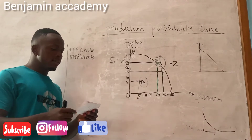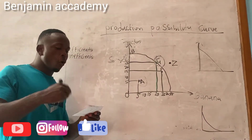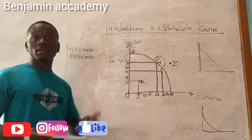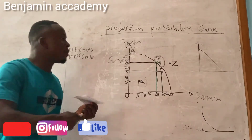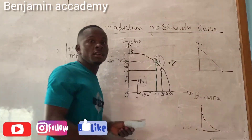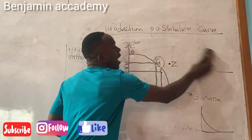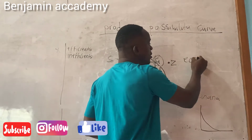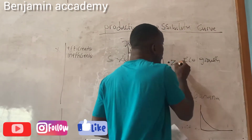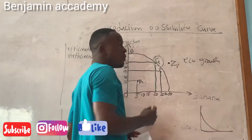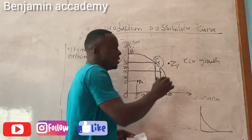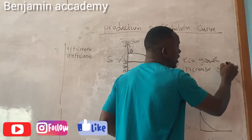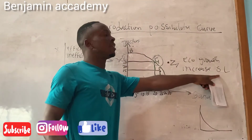Now, there are at least four conditions for which a country produces at point Z. When a country is producing at point Z, there is economic growth, and there is an increase in the standard of living.